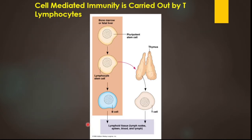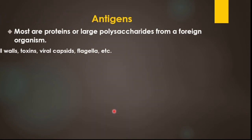Stem cells from bone marrow differentiate into lymphocytes. If the lymphocyte stem cells mature in the bone marrow, we call them B-cells. But if the bone marrow stem cells mature in the thymus, we call them T-cells.